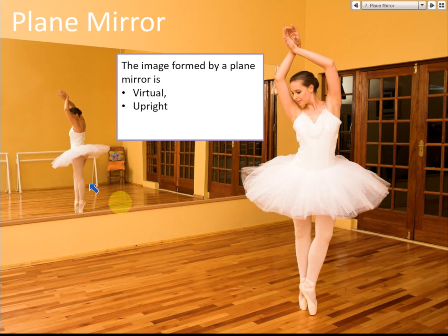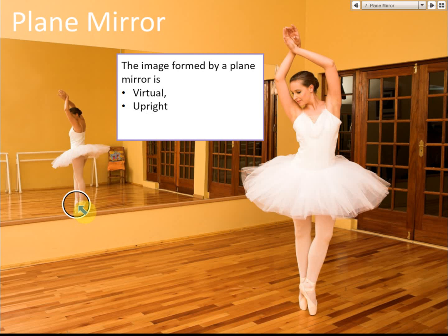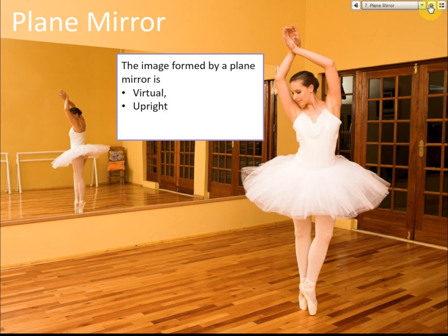Upright means the head is on top and the hand is also above the head, just like the object. Inverted would mean the head is at the bottom. But for plane mirrors, the image is upright — it is not inverted.